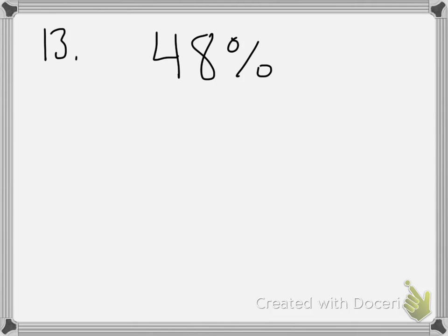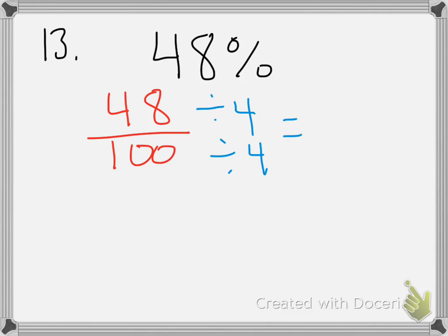For number 13, same directions: write each percent as a fraction or mixed number in simplest form. So 48% literally means 48 per 100 — remember, 'cent' is like century, 100 years. Some of you left it as 48/100, which is not simplified. Divide both by 4: 48 ÷ 4 = 12, and 100 ÷ 4 = 25. Your final answer should have been 12/25.